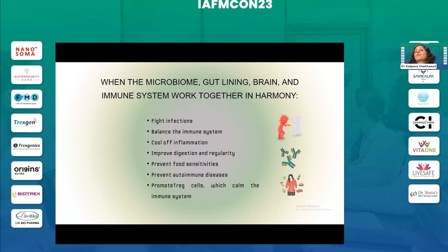When the microbiome, gut lining, brain, and immune system work together in harmony, they fight infections, balance the immune system, cool off inflammation, improve digestion and regularity, prevent food sensitivities, prevent autoimmune disease, and promote regulatory T cells which calm the immune system.